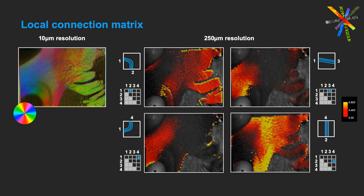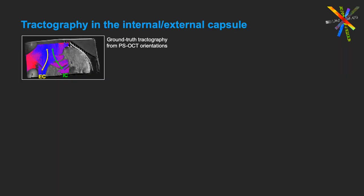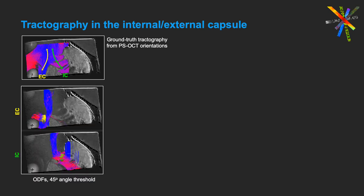However, for now we have this 4x4 matrix, so we keep the ODF and we use the LCM to choose which of the ODF peaks to follow, depending on the edge from which we enter the voxel. At the top, you see the ground truth tractography from the polarization-sensitive OCT at 10 micron resolution. At the bottom, you see tractography using the diffusion orientations. We see it everywhere in the sample and I am showing the streamlines that go through a yellow sphere in the external capsule or a green sphere in the internal capsule.